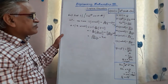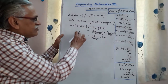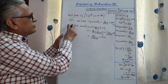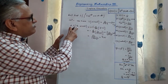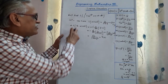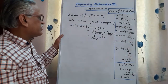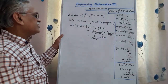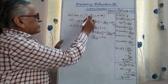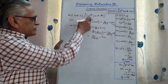Two steps are completed: first, I calculated the Laplace of sin(3t); then I applied the multiplication by t^n theorem. Next, we apply the first shifting theorem.